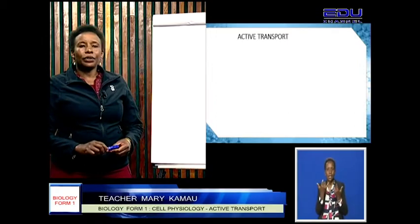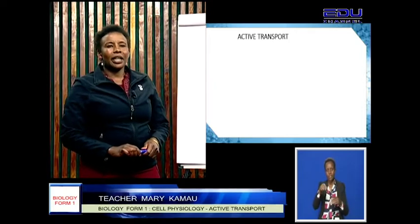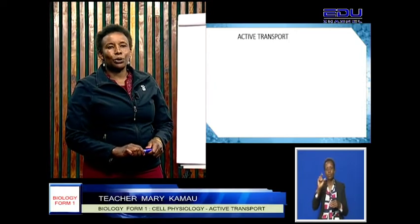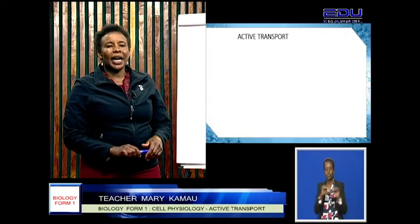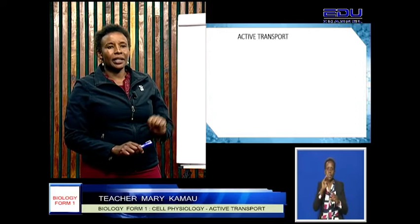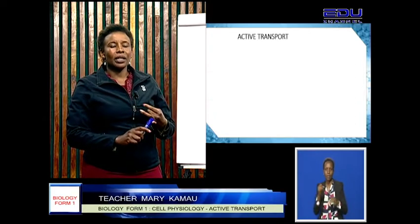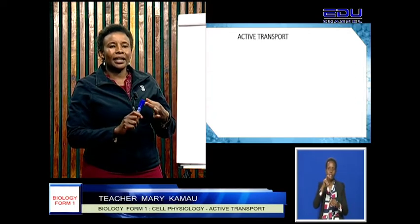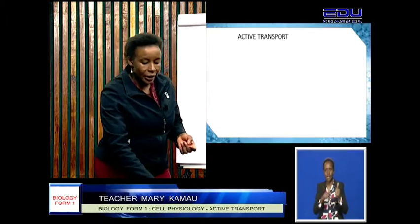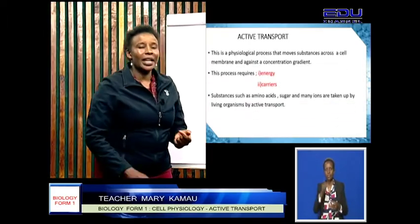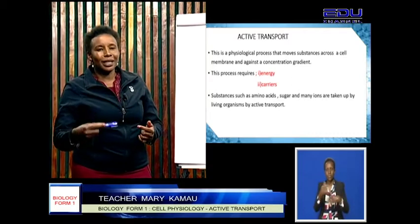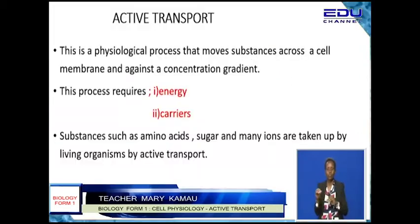Active transport is a physiological process that allows substances to move across a semi-permeable membrane. There are three physiological processes: we have diffusion, we have osmosis, and then we have active transport. This physiological process allows substances to move across a semi-permeable membrane.